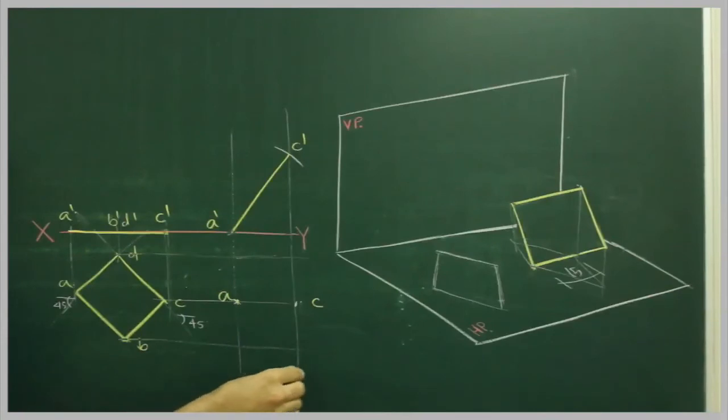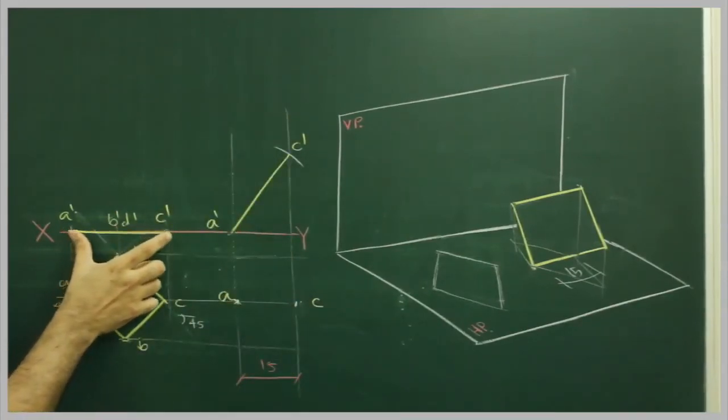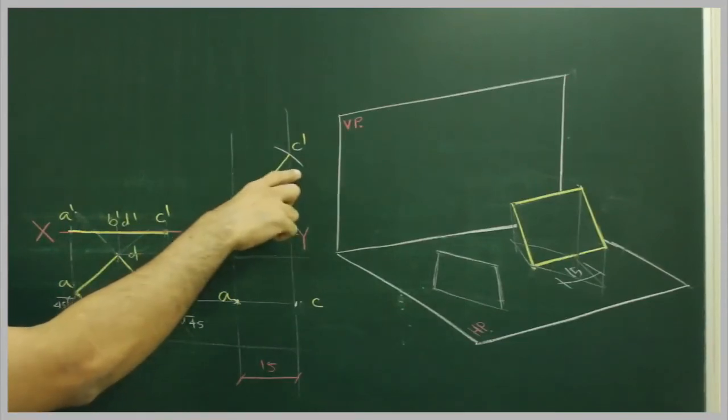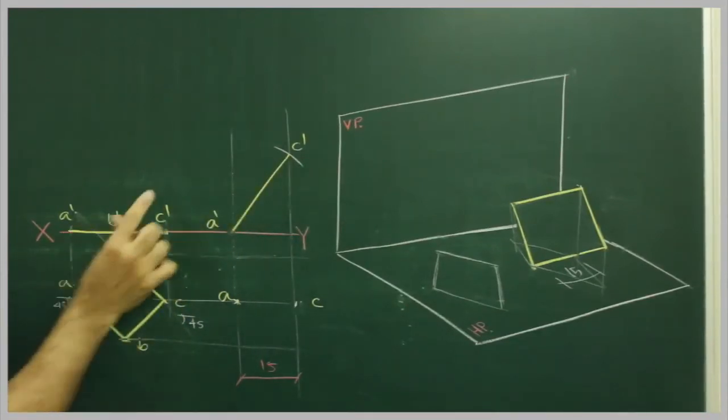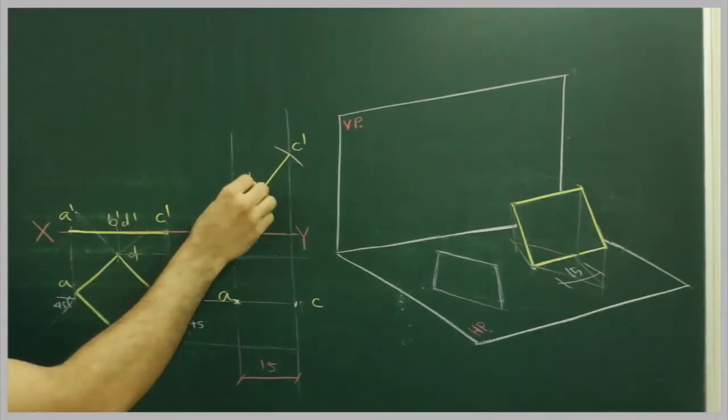So first we have to mark 15, draw these two lines. Then take A' to C' and from here you cut on this side. Then you take A' to B' to D' and you cut on this side. So you get B'.